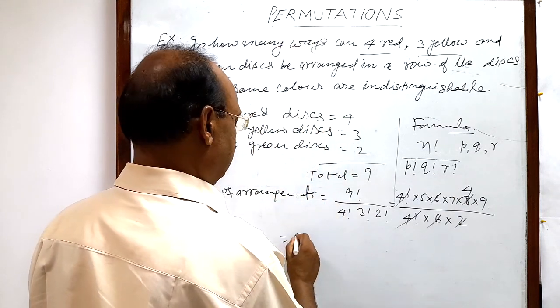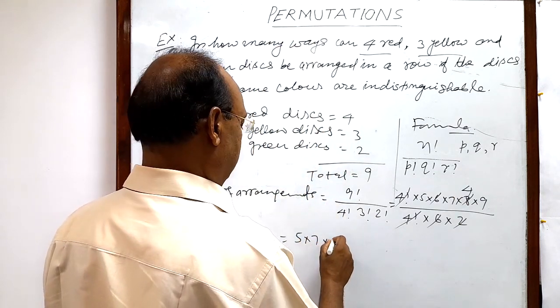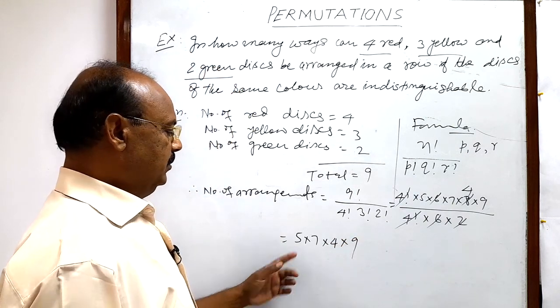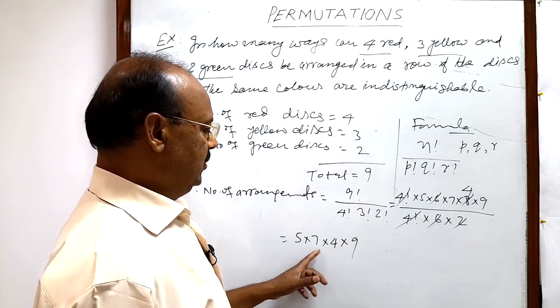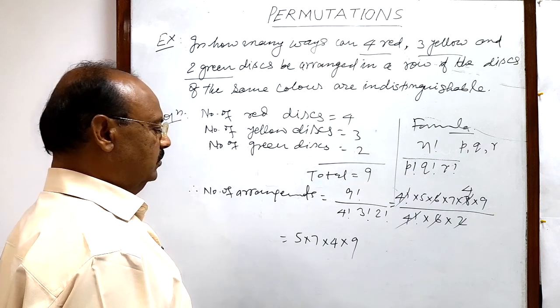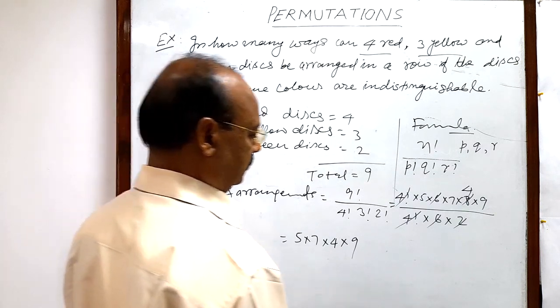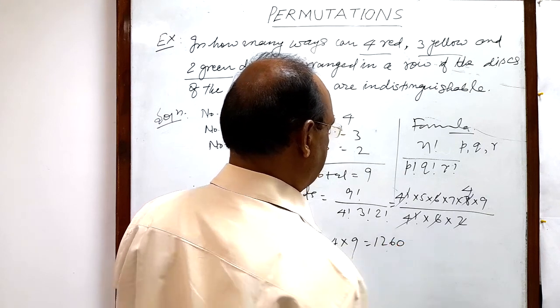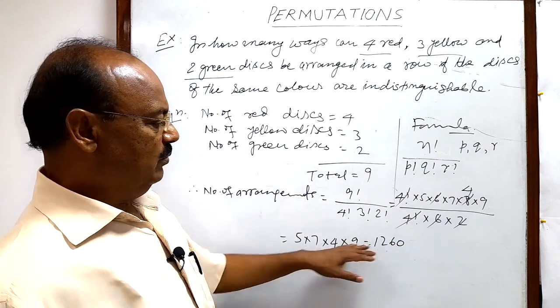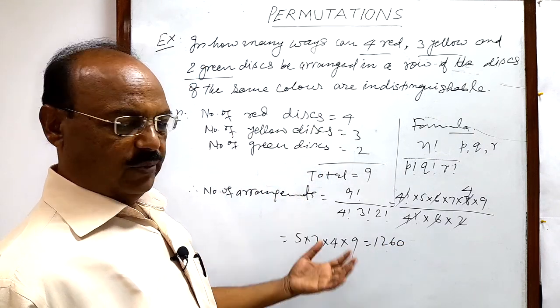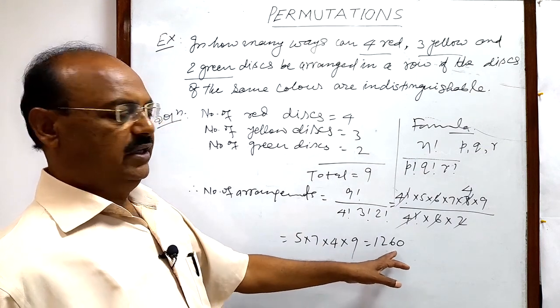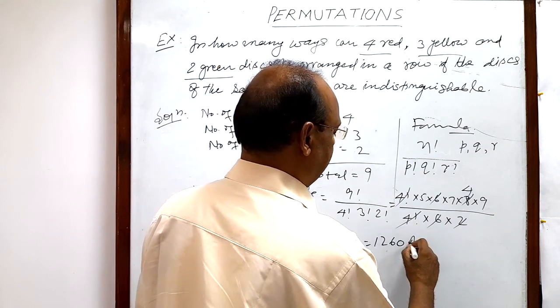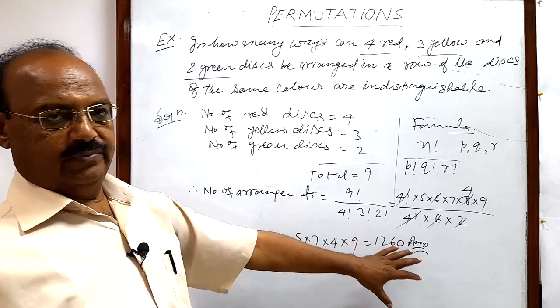So we are getting here 5 times 7 times 4 times 9, and after multiplication we are getting 1260. So total number of arrangements, total number of permutations will be 1260. This will be the answer.